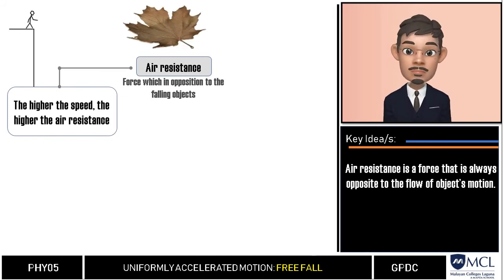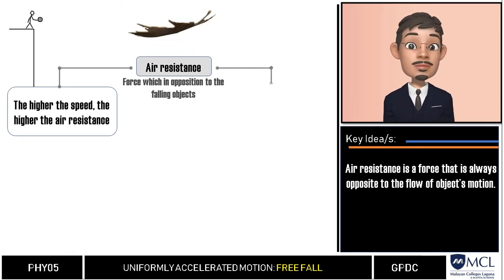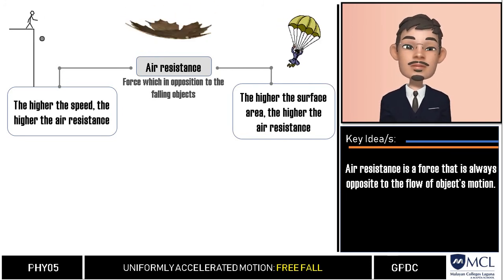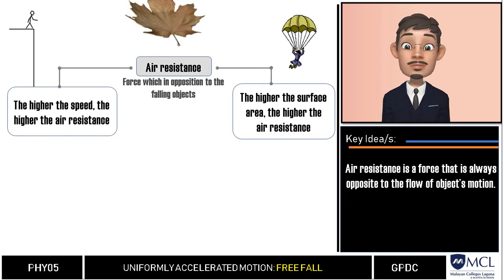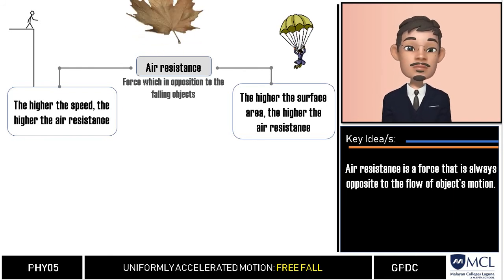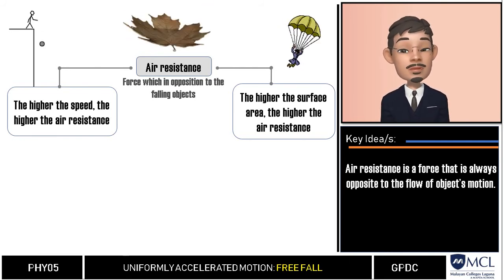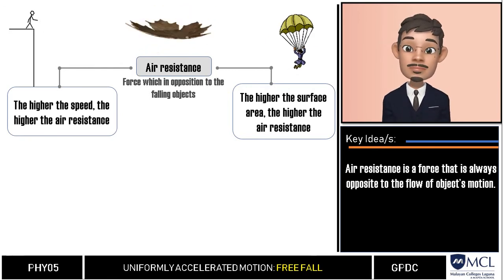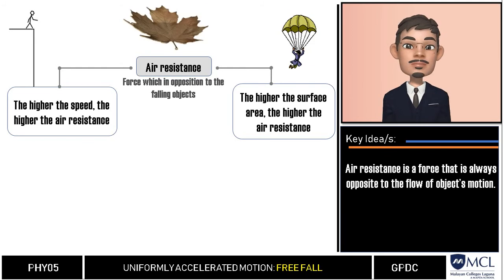Also, air resistance increases with the increase of surface area of an object. Imagine that the air is composed of several air molecules. As an object falls, these molecules collide at its surface. Therefore the larger the surface area of an object, the more air molecules will hit the object per second and oppose its motion.